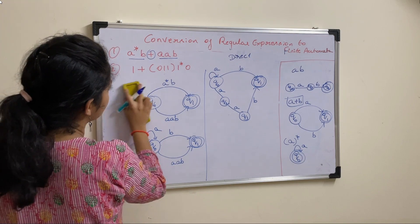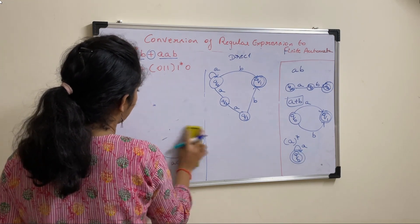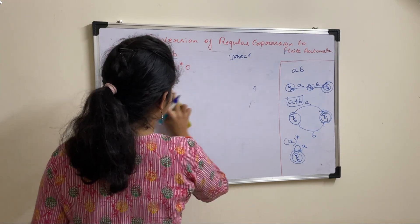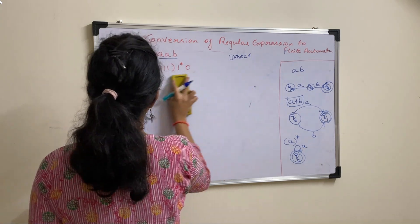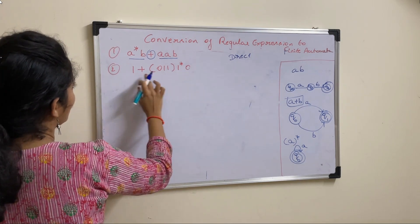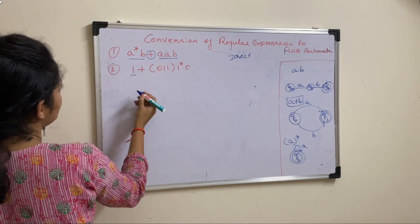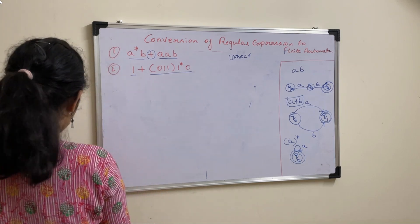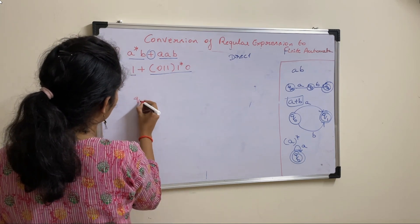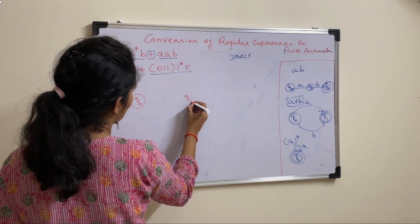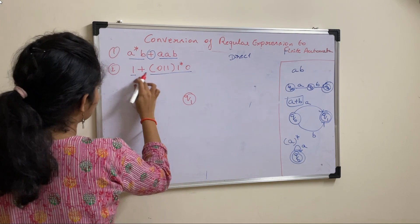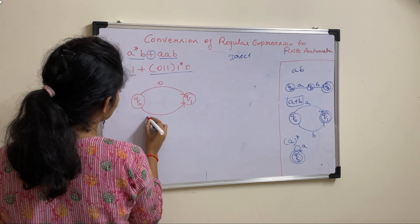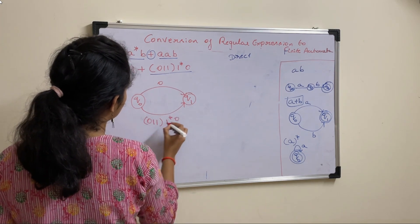Now, let us see how to solve our second example. Again, you can do the same thing. Divide it into two parts. One plus the rest of the part. So, write it like this. First should be Q naught. Take two states. Q1. And here, this is in the form A plus B. So, this is A. And this is B. You can write this B as it is. One star. Zero.